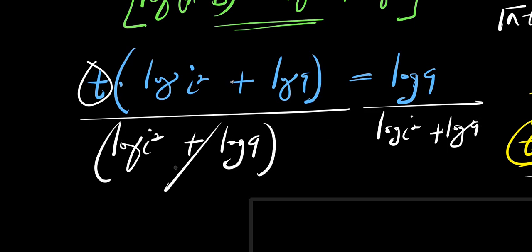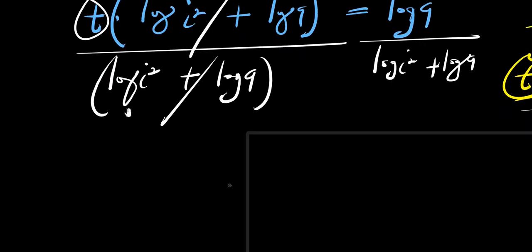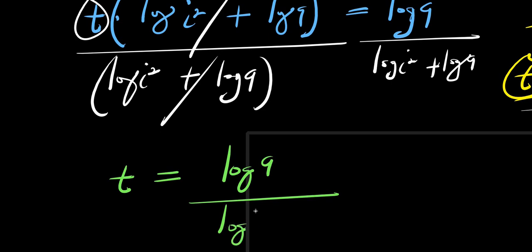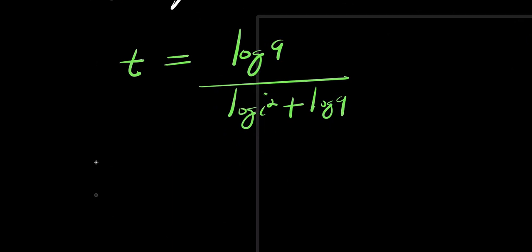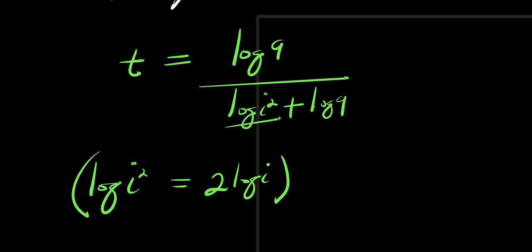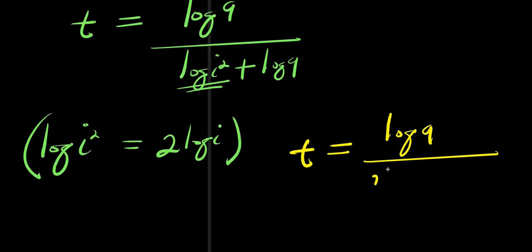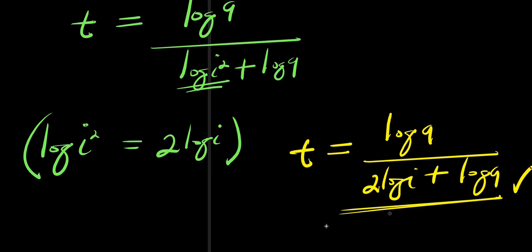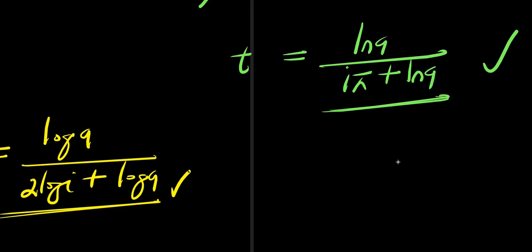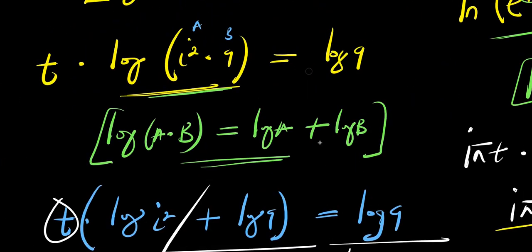After cancellation, I have t equals log 9 divided by log i squared plus log 9. And note that log i squared equals 2 times log i. So replacing that, I simply have t equals log 9 divided by 2 log i plus log 9. So that is it — here are the two solutions for t using both methods.